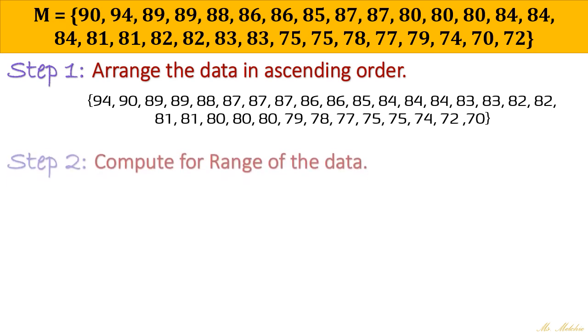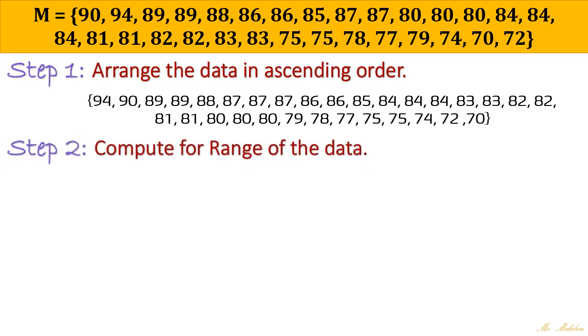Next to that is compute for the range. So by the way, what is our formula for the range? So highest score minus lowest score and always add by 1. Okay, so 1 here is fixed. So now what is our highest score? So of course, since we were able to arrange the data already in ascending order, it would be easier for us to identify the highest score. And with that, we do have this 94.